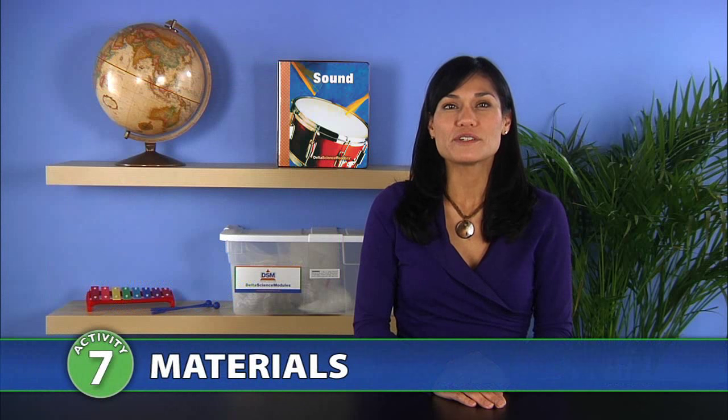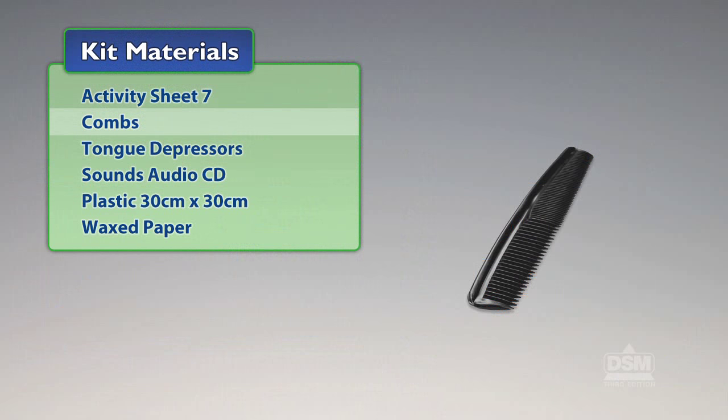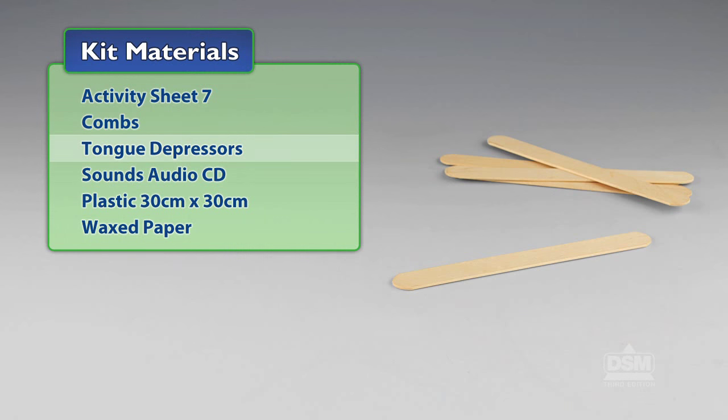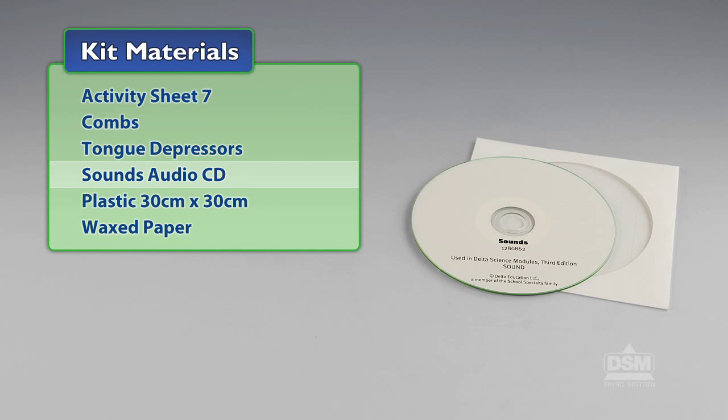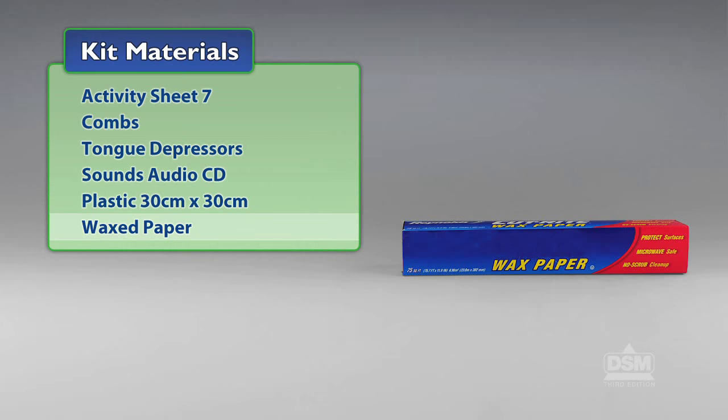You will need the following materials from the kit: Activity Sheet 7, Combs, Tongue Depressors, Sounds Audio CD, Plastic 30 cm by 30 cm, and Waxed Paper.